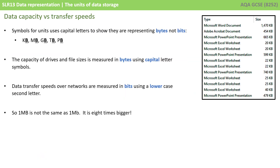Our final observation is the symbol for each of these units: KB, MB, GB, TB, and PB — shown in capital letters because they're representing bytes, not bits. Confusingly, the capacity of drives and the size of files is measured in bytes using capital letters, but data transfer speeds over a network are measured in bits per second using a lowercase second letter. Therefore, one capital MB is not the same as one capital M lowercase b — it's eight times bigger.